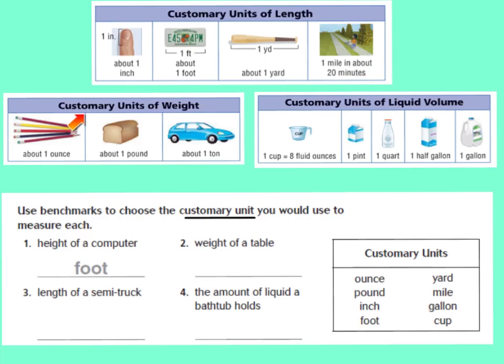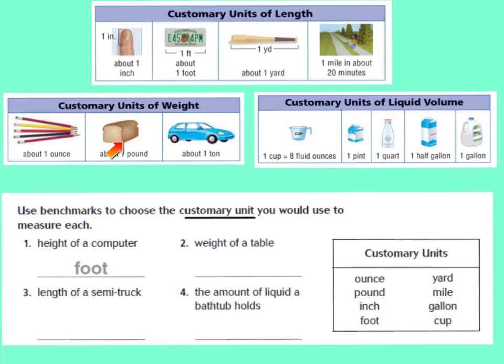Now let's talk about customary units of weight. The weight of an ounce is approximately a few colored pencils. You can also consider an ounce to be the weight of one slice of bread. But a pound is about the weight of a whole loaf of bread. I also think of a pound as the weight of a tennis shoe.